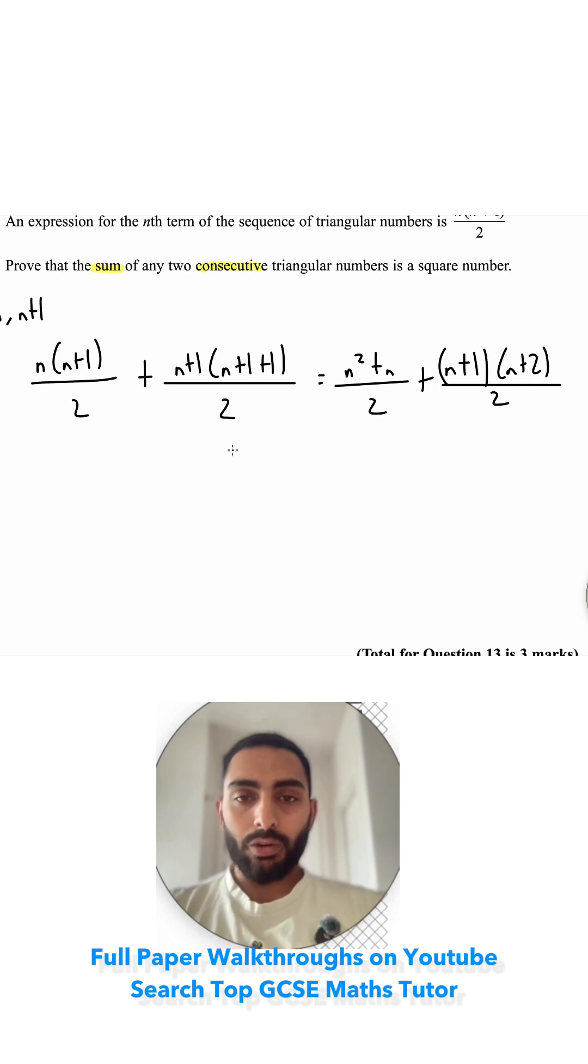And you need to expand this bracket out next, so I'm doing (n²+n)/2 plus this bracket, so I'm doing n times n, which is n². And a quick way to do this, if you do 1 add 2, it gives you 3, so I've got plus 3n, and 1 times 2 is 2, so plus 2. That's just a quick way of expanding double brackets.